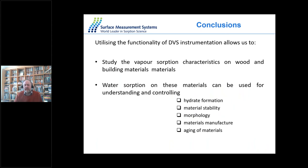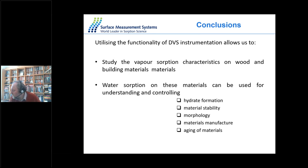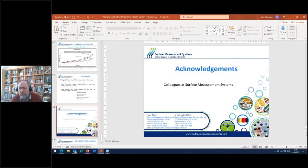Drawing to a close, this has been a quick survey. For essentially any material, including building materials, we're able to determine water absorption properties. These can tell us about hydrate formation, stability, morphology, manufacture, and aging. There are many examples where understanding the performance of building materials is important. These properties can be measured quite easily and quickly using dynamic vapor absorption instruments — a new tool to add to your research armory when trying to understand how materials behave with their environment. I'll stop now and be happy to answer any questions.